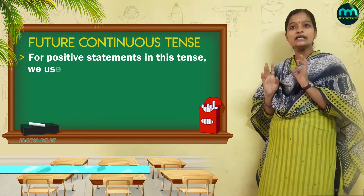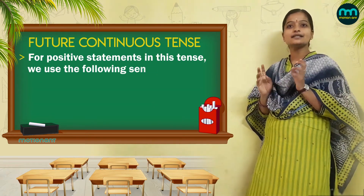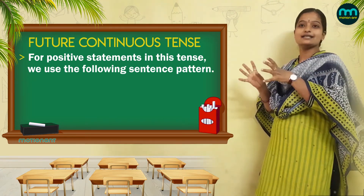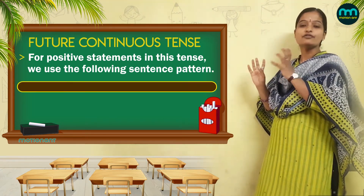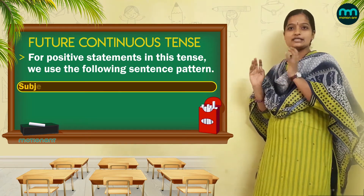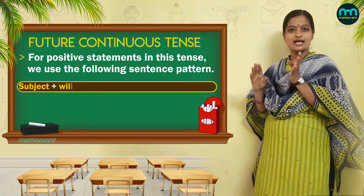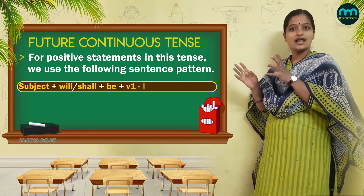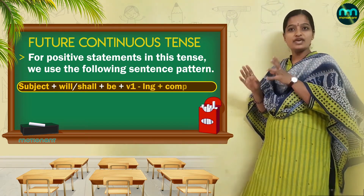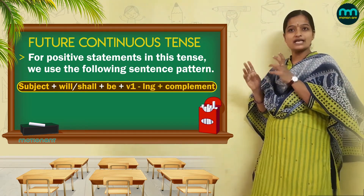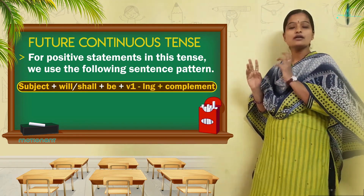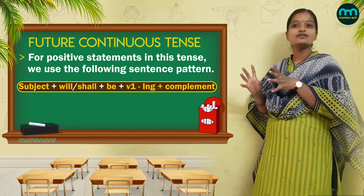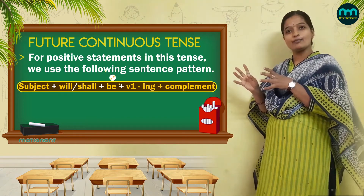For positive statements in this tense, the sentence pattern is: Subject plus will or shall plus be plus the V1 form of the verb by adding -ing plus complement.